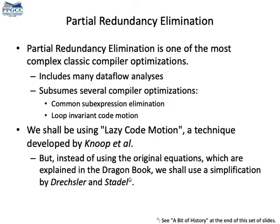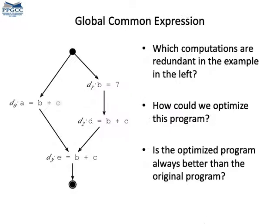I will be presenting the algorithm of Knoop et al. that was published in PLDI 1992, but that paper is a bit complicated, so I shall use the notation that was later invented by Drechsler and Stadel one year later. Partial redundancy elimination is a compiler optimization that reduces the number of operations a program performs during its execution.